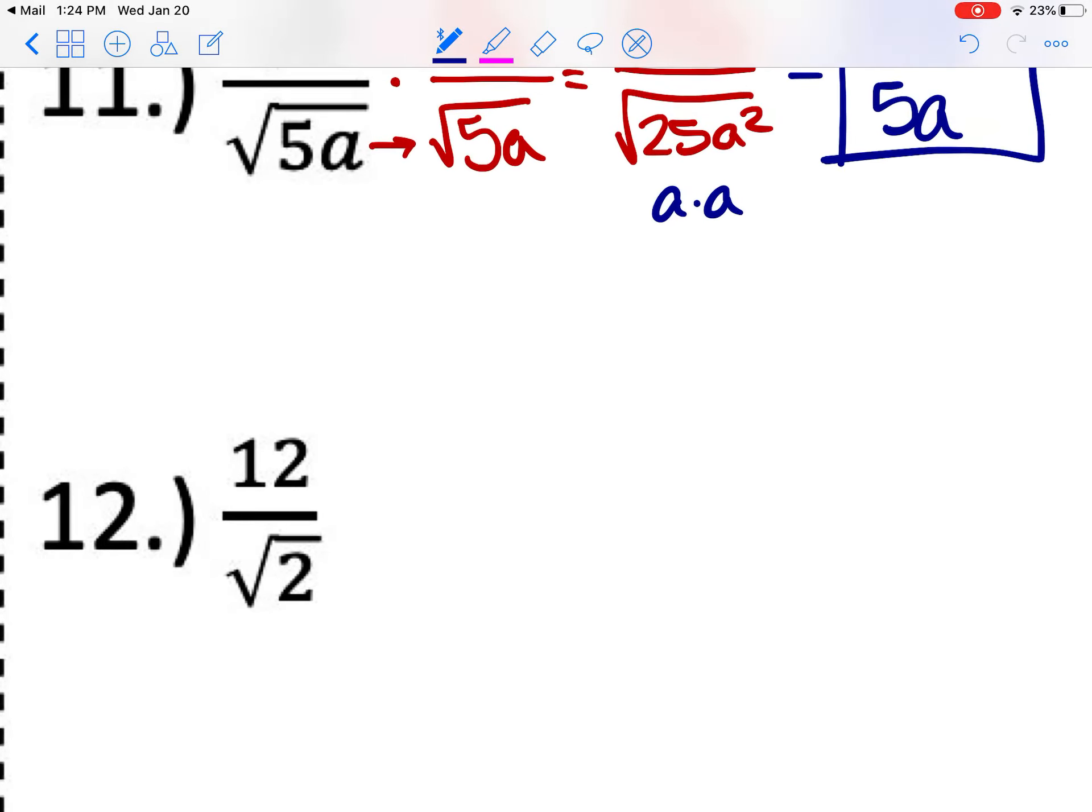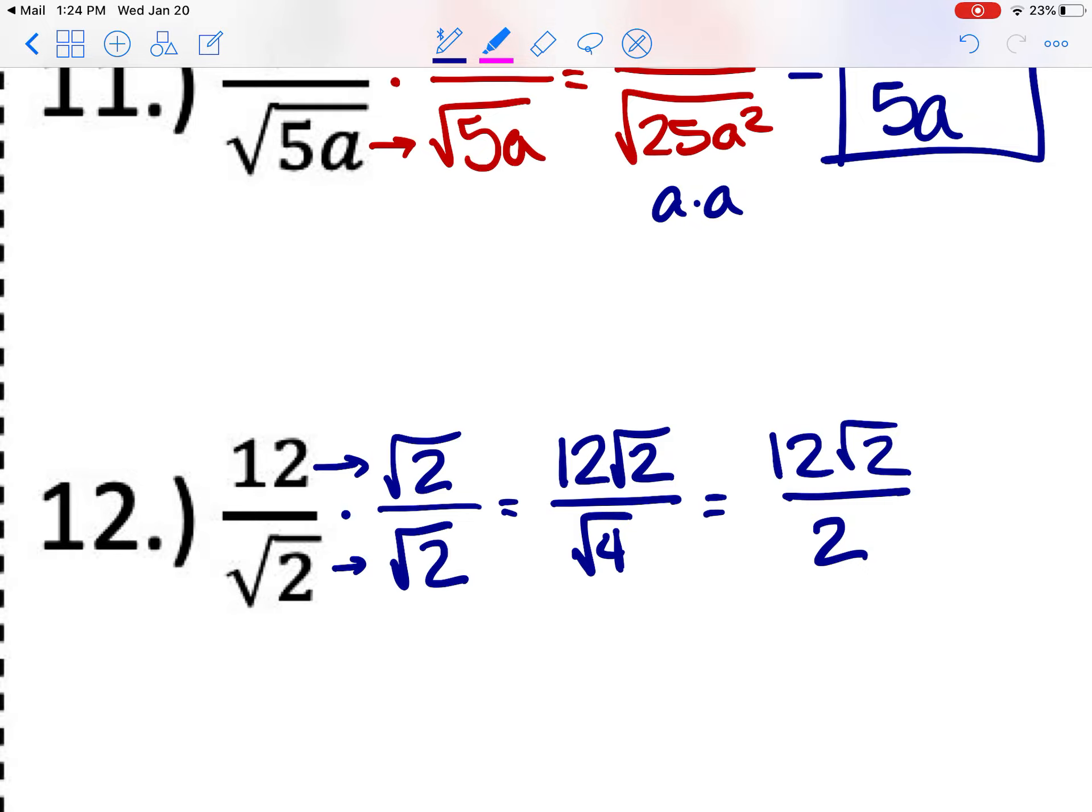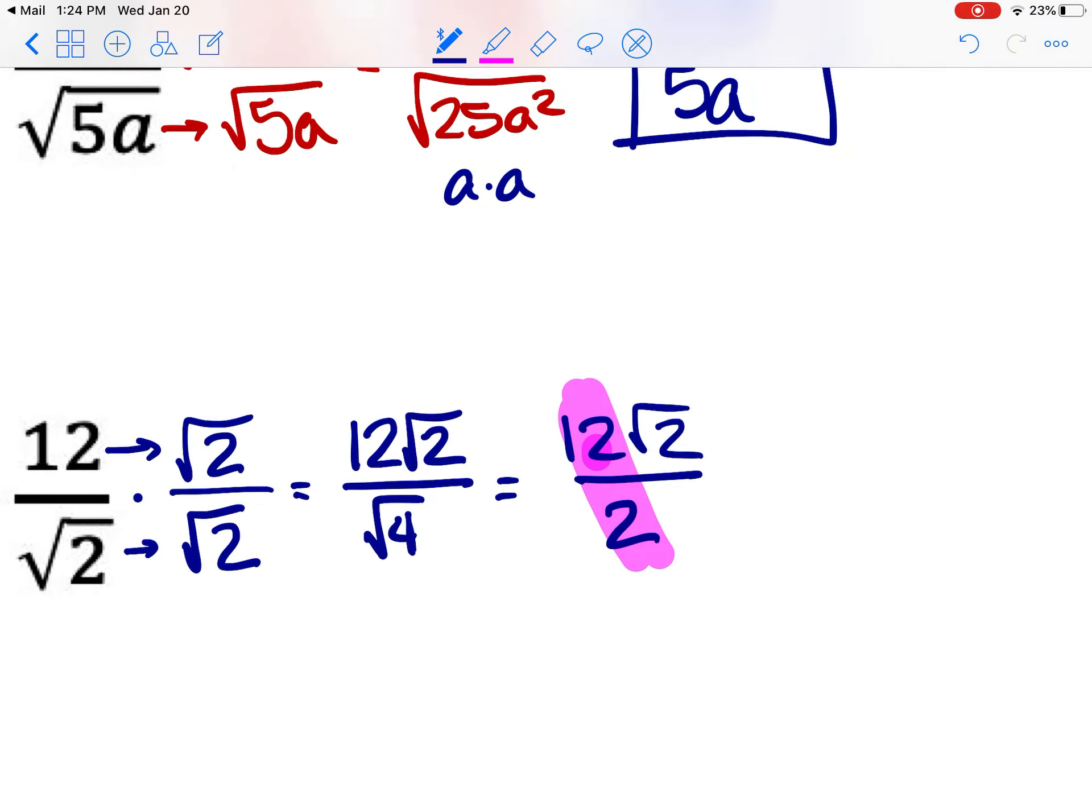All right, I'm going to do one more with you. And then you can look at number 13 in the notes keys. We cannot simplify that square root of 2. It's not perfect. So we're going to rationalize. Multiply the square root of 2 over the square root of 2. Multiply straight across. They're not like terms, so they just go side by side. Square root of 2, square root of 2 is the square root of 4. We know the square root of 4 is perfect. So we can say 12 square root of 2 over 2. But again, we always have to check. Can I simplify that down? Yes. 12 divided by 2 is 6. So this gives me 6 square root of 2.